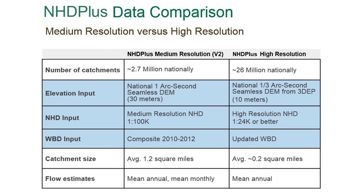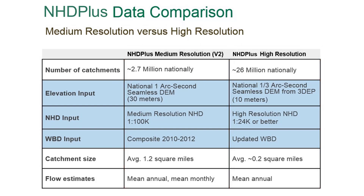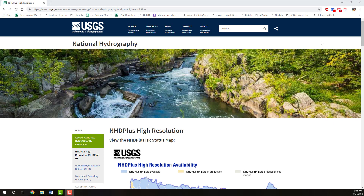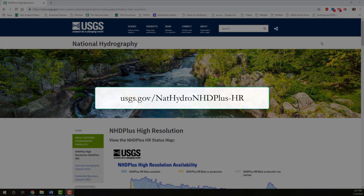This table contrasts the characteristics of NHD Plus with NHD Plus High Resolution. For example, NHD Plus HR has almost 10 times as many hydrographic features as NHD Plus. The average catchment size for NHD Plus HR is approximately 0.2 square miles versus 1.2 square miles in NHD Plus. More information about NHD Plus and NHD Plus High Resolution can be found at usgs.gov/nat-hydro/nhd-plus-hr.